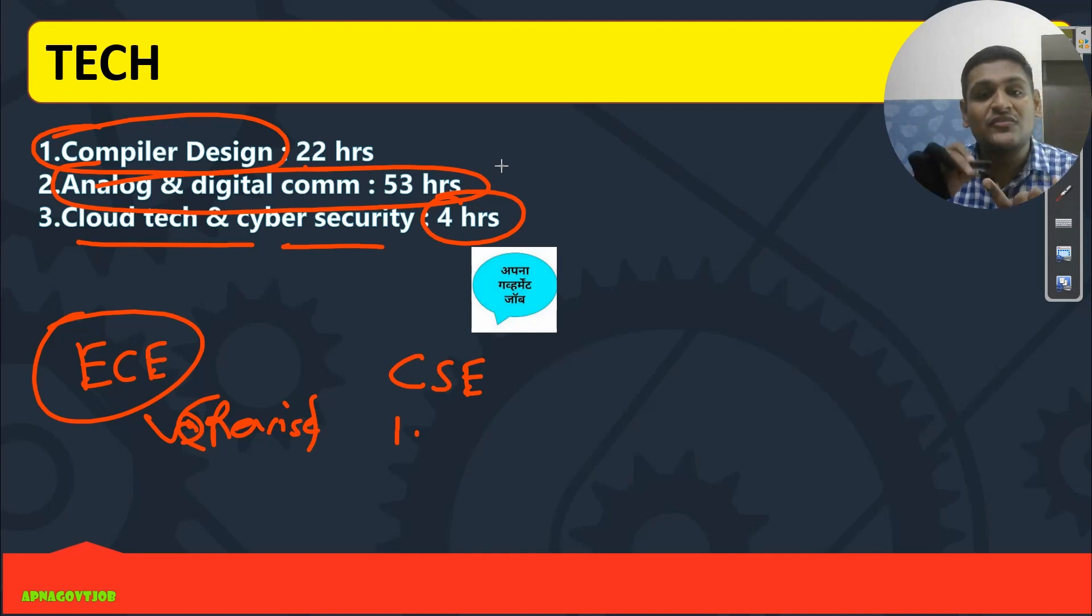If you are in Phase 3 or if you are in Phase 2, then directly you can skip this part. I don't want to invest this 53 hours in this. Rather than, see, Programming, Data Structure, DBMS, you can target that in this 53 hours.